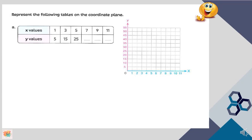Look at this example. If I have the first numbers for x values: 1, 3, 5, 7, 9, 11, let's look at y values. Five becomes 15, 15 becomes 25, 25 becomes 35, then 45, then 55. To create them in coordinate plane, I must write the ordered pairs.